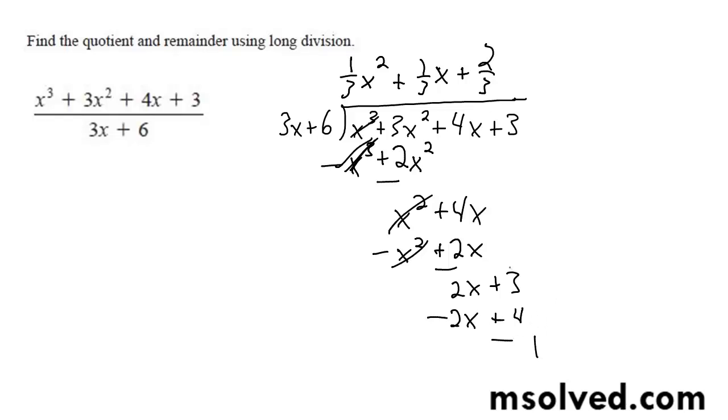So we're left with minus 1. So our solution is going to be x squared plus x plus 2 all over 3, minus 1 over 3x plus 6, and that's it.